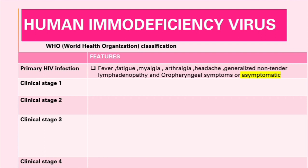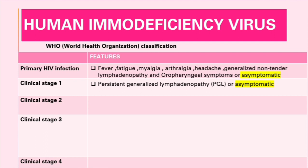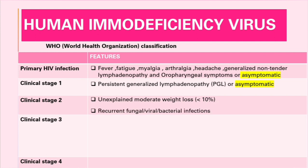Clinical stage one is characterized by persistent generalized lymphadenopathy (PGL) and in some cases can also be asymptomatic. Clinical stage two is characterized by moderate weight loss — less than 10% — and recurrent fungal, viral, or bacterial infections.